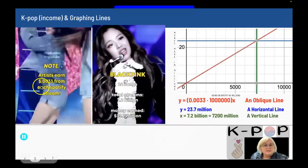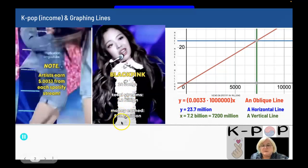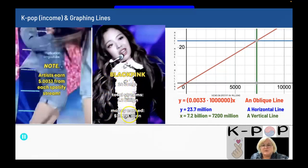The artists earn $0.0033 from each Spotify stream. Blackpink had 24 songs, their total streams were 7.2 billion, and the money earned was 23.7 million. If I graph this bottom information — ignoring the number of songs for right now —